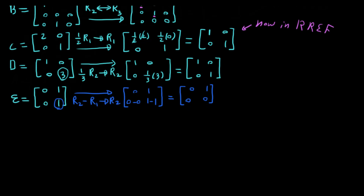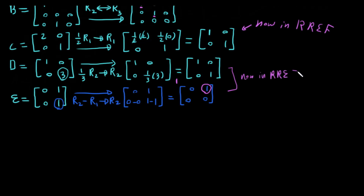Now we check if matrix E is in RREF: here is the 1, go below then right to find the next 1 — but below is zero, so we're done. Both rows are now in RREF.